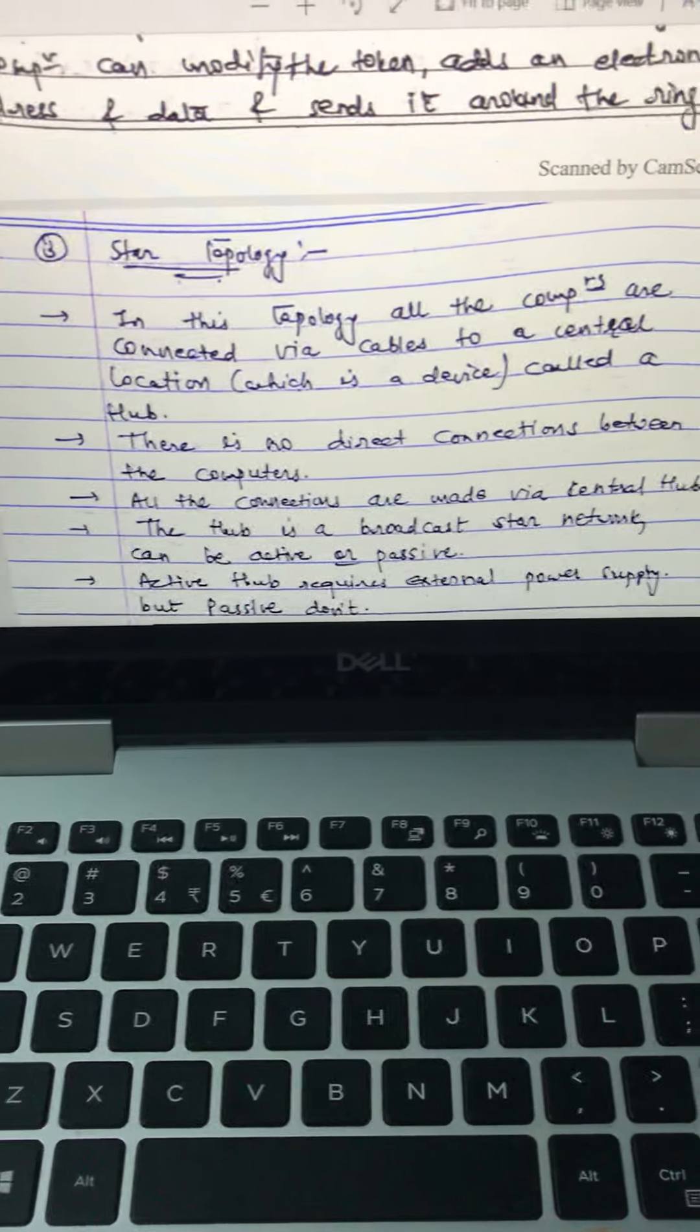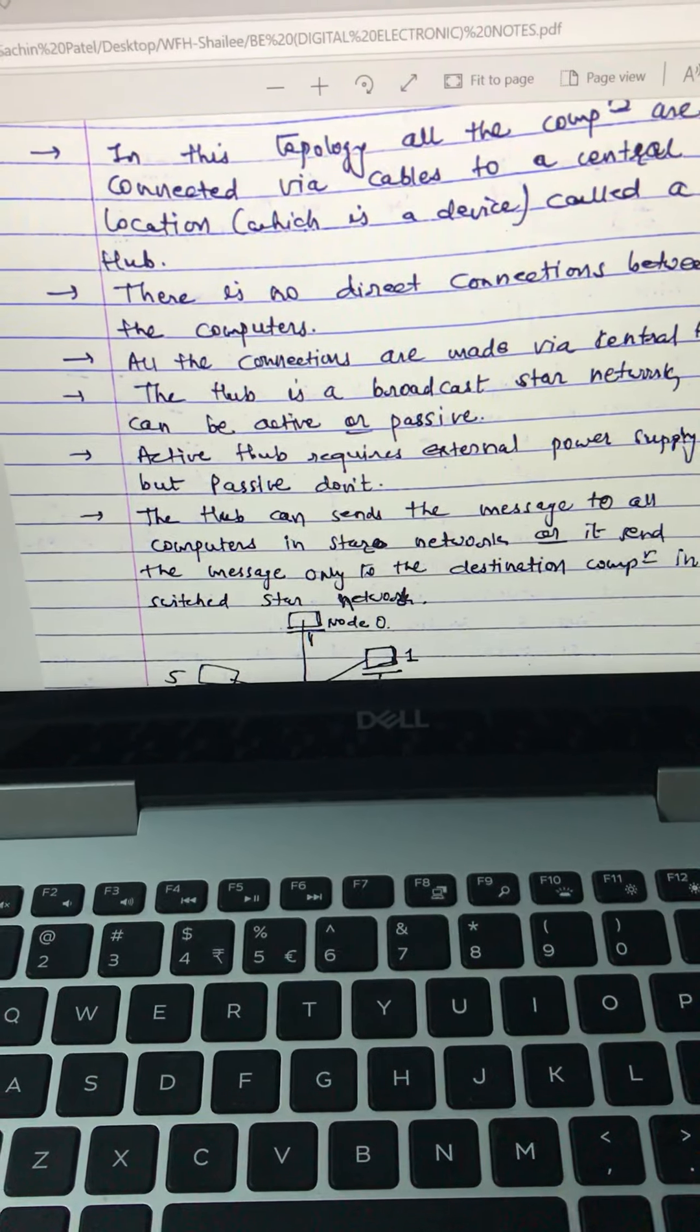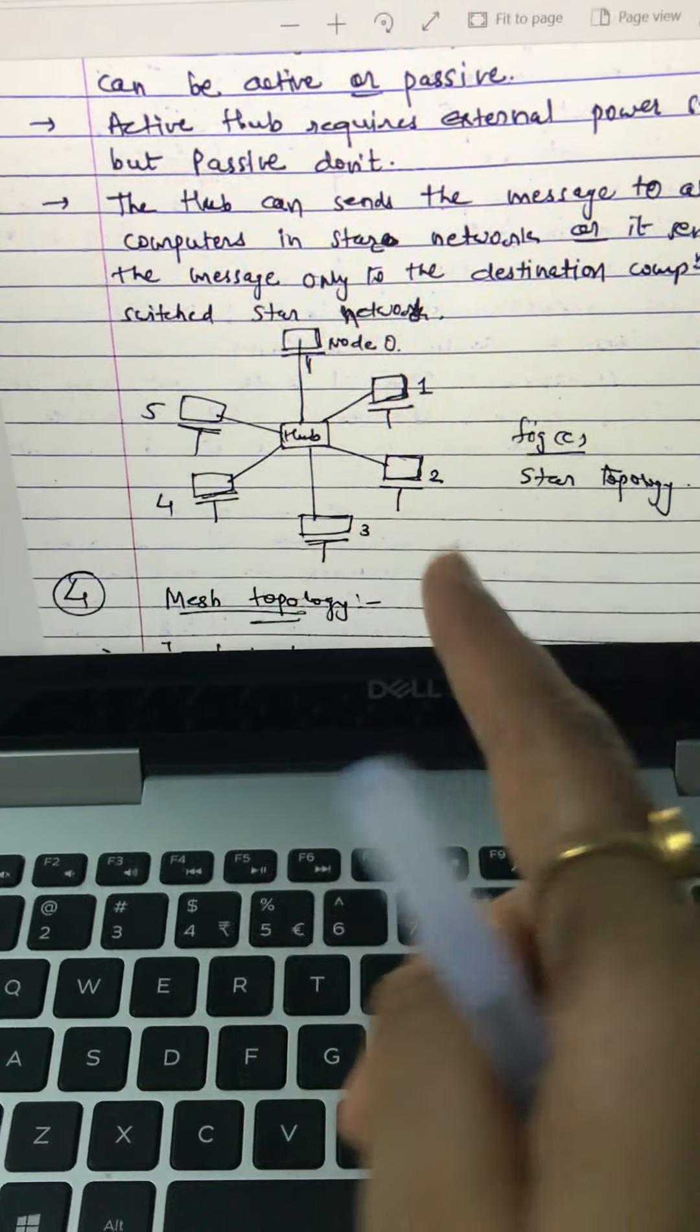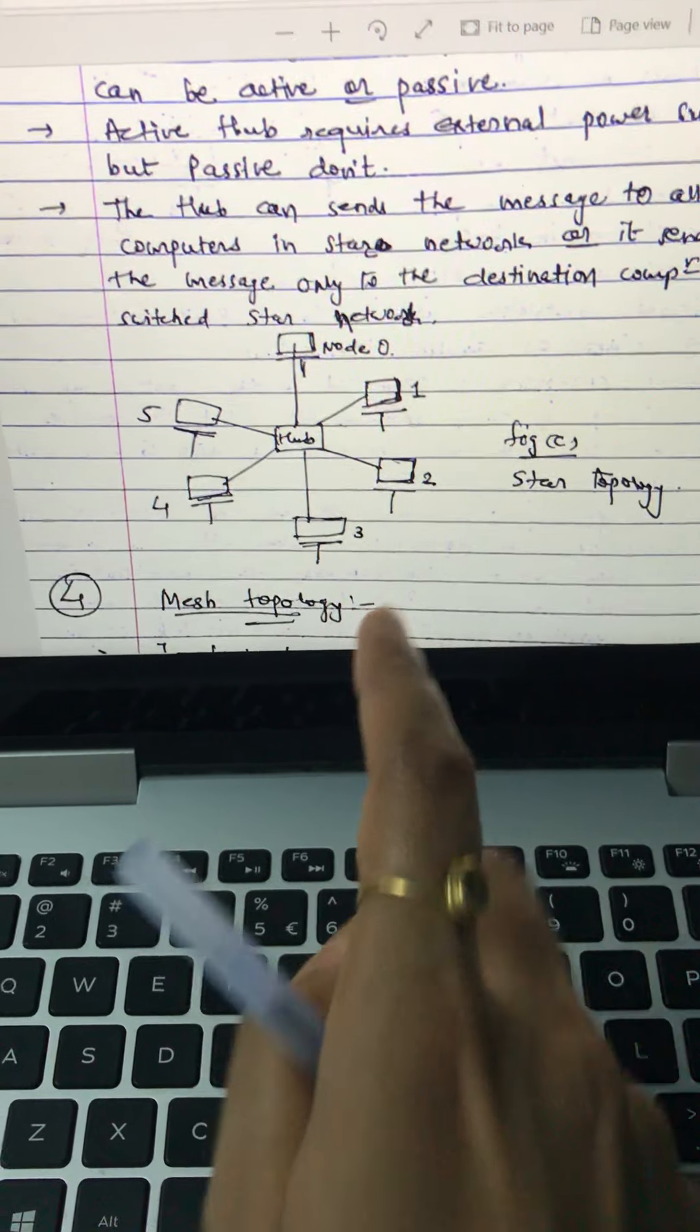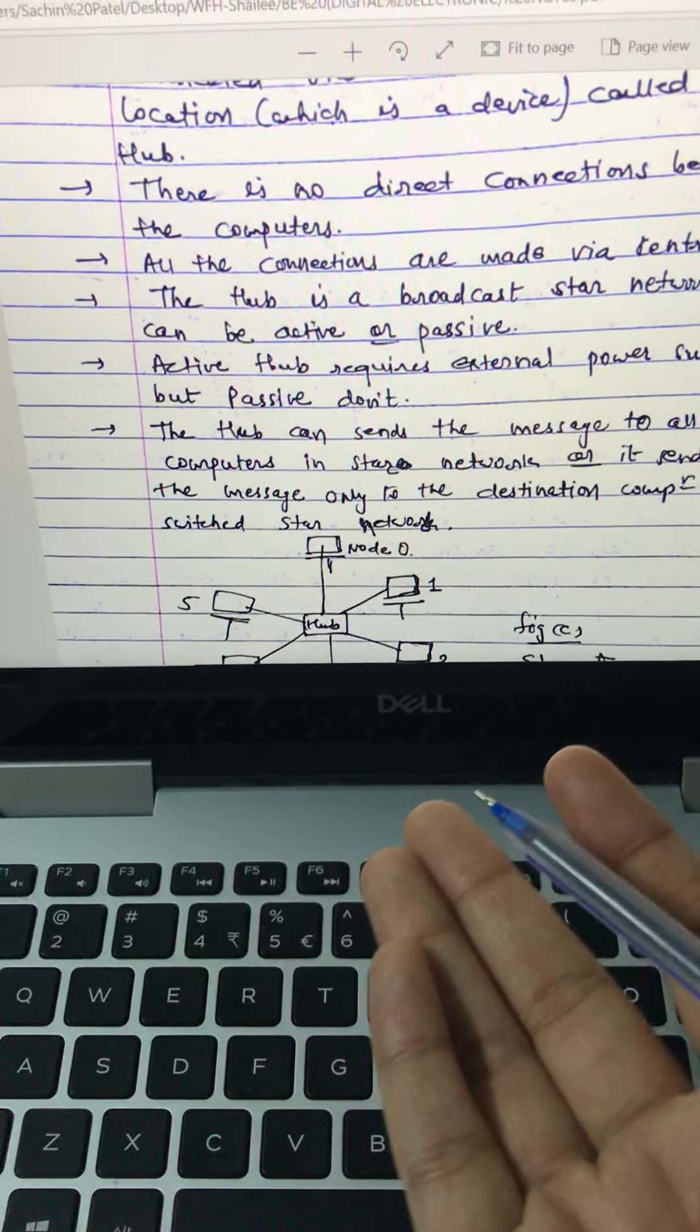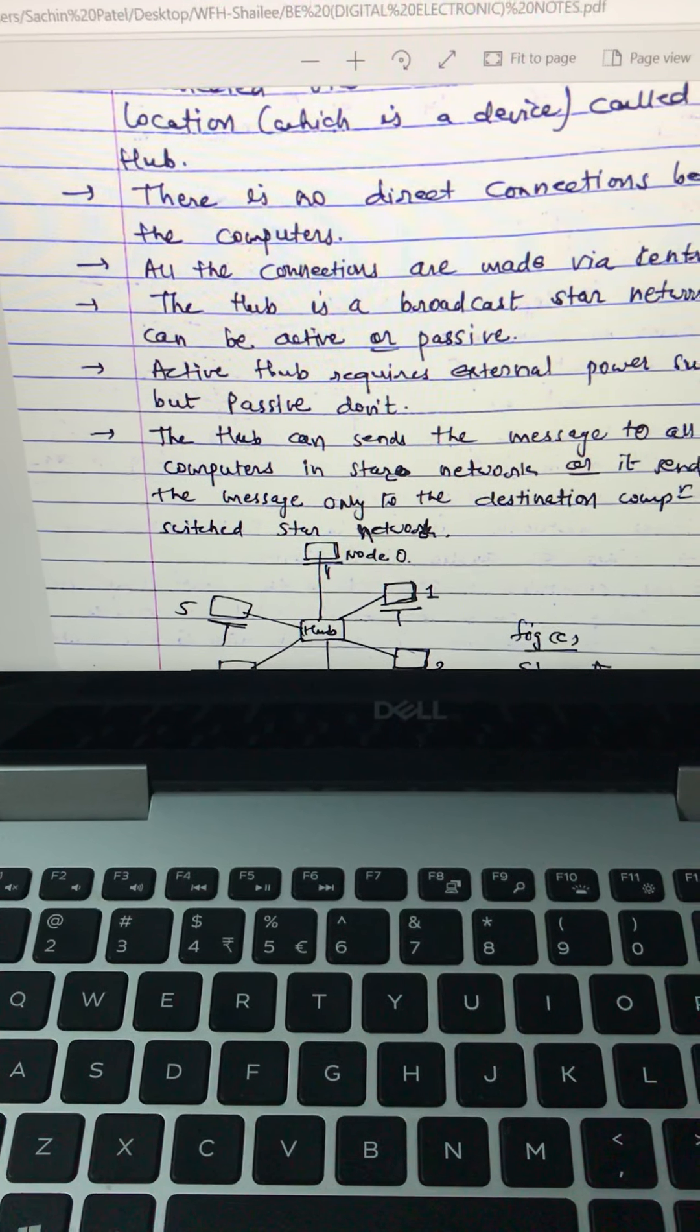Then it came to star topology. In this topology all the computers are connected via cables at a central location which is called hub. So that is a hub. See, all computers are connected with the hub. So this technology is physically active because there is a connection between them. All the connections are made with the central hub.